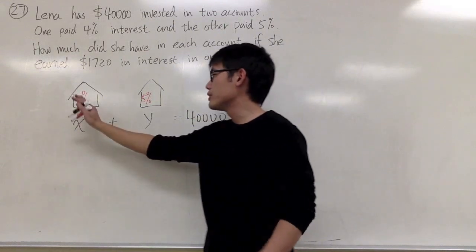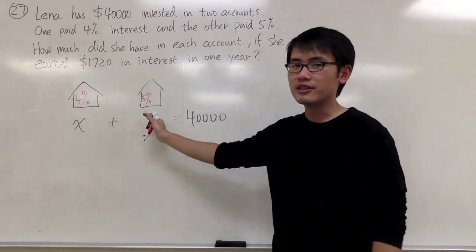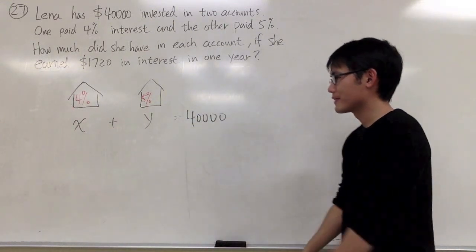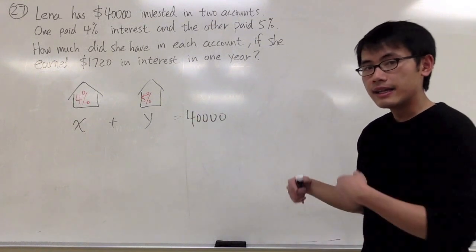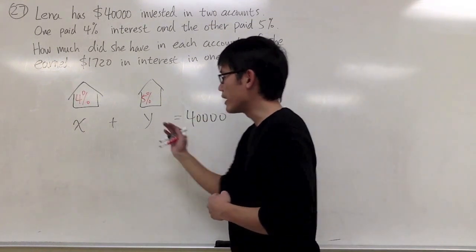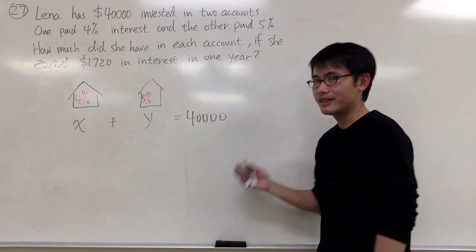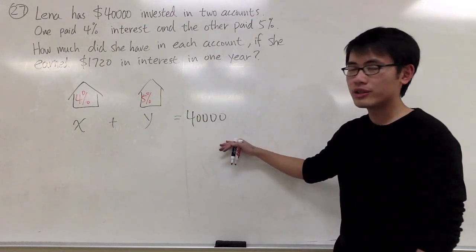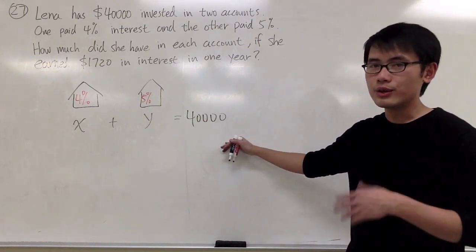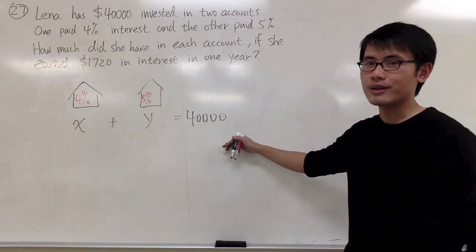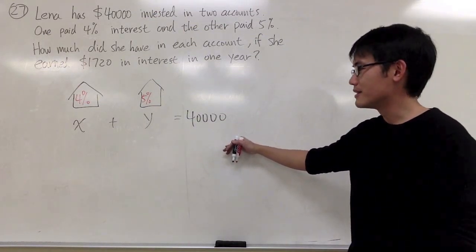So it could be I put $10,000 here and $30,000 here, things like that. And that's the first equation, but we have x and y in one equation, right? We need to have another equation in order to make this two equations with two unknowns, a system of equations.